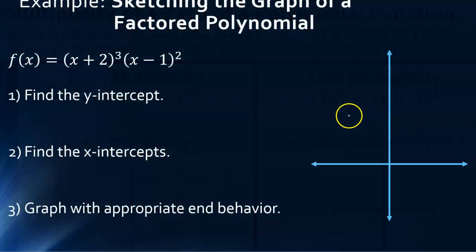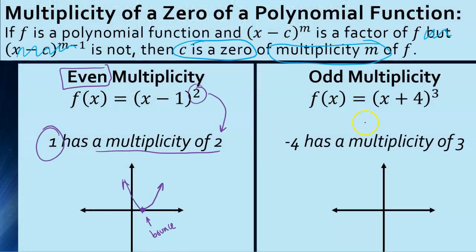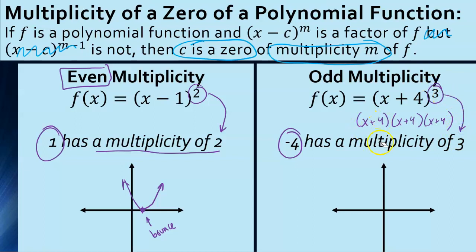Let's look at the next one. We have x plus 4 cubed, which means x plus 4 times x plus 4 times x plus 4. I could set that factor x plus 4 equal to 0, and I would get negative 4. So my x-intercept would be at negative 4. But the fact that I have an exponent of 3 means a multiplicity of 3. You just look at it and say: the zero is negative 4, the exponent is 3, so there are 3 of them.